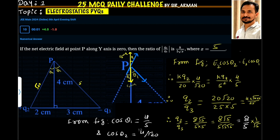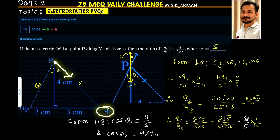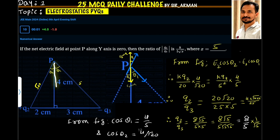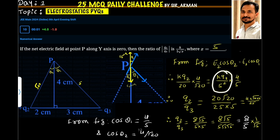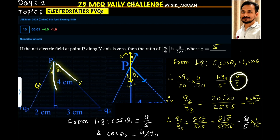For charge number 3, E3 equals KQ3 by R squared. This R is 5 — you can find it easily because the two sides are 4 and 3, making a 3-4-5 triangle, so R equals 5. Therefore E3 equals KQ3 by 25. For cos theta 1, the adjacent side is 4 and the hypotenuse is 5, so cos theta 1 equals 4 by 5.